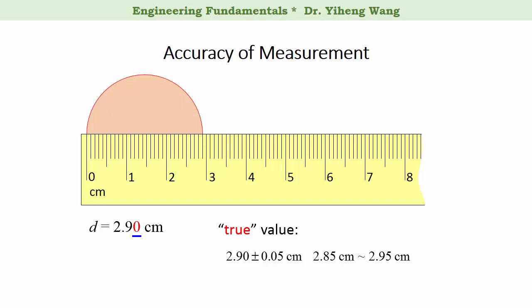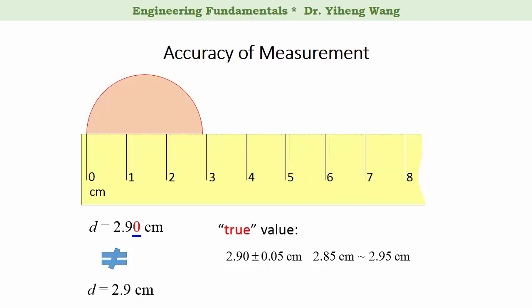The diameter of this circle should not be represented as simply 2.9 cm, because another engineer would assume that you used a ruler with less precision, and could perceive that the true value is somewhere between 2.9 plus or minus 0.5 cm — in other words between 2.4 cm and 3.4 cm. Although mathematically 2.90 equals 2.9, the difference here is the number of significant figures: 2.9 has two significant figures versus 2.90 has three significant figures, which indicates a higher level of accuracy.